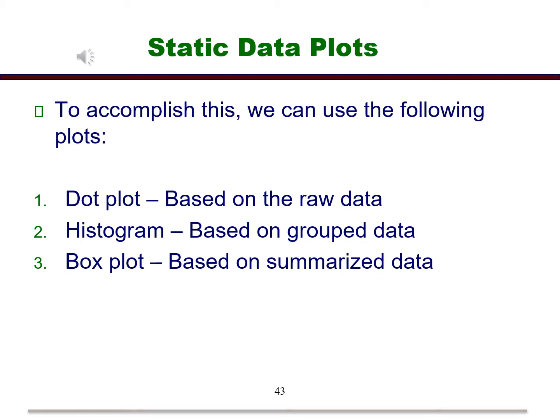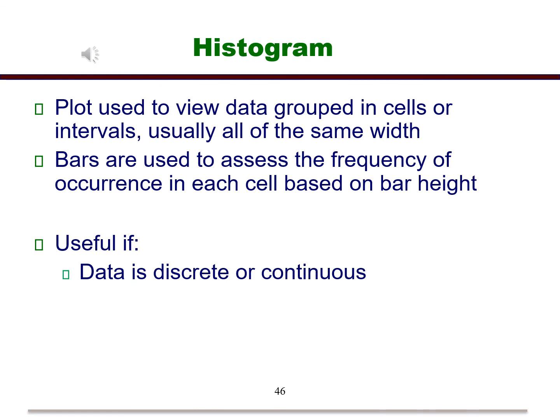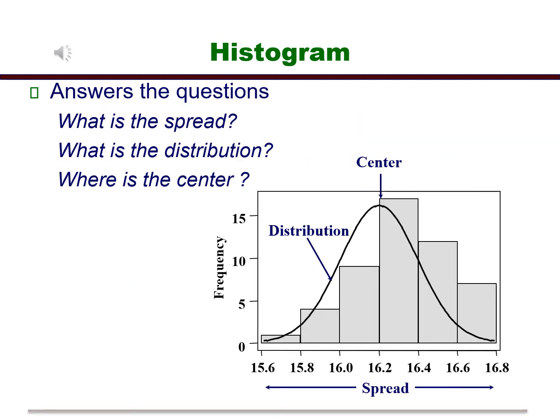Let's first look at a histogram. A histogram is a static plot of grouped data. We will group data into cells or intervals. Then we plot bars where the heights are the counts within the groups. A histogram is useful in both the discrete and continuous data situation. A histogram sorts the data in intervals and plots the amount of data in each interval as a height of a bar. A histogram is useful in seeing the shape of the distribution of the data, where the center is, and what type of variability it has.